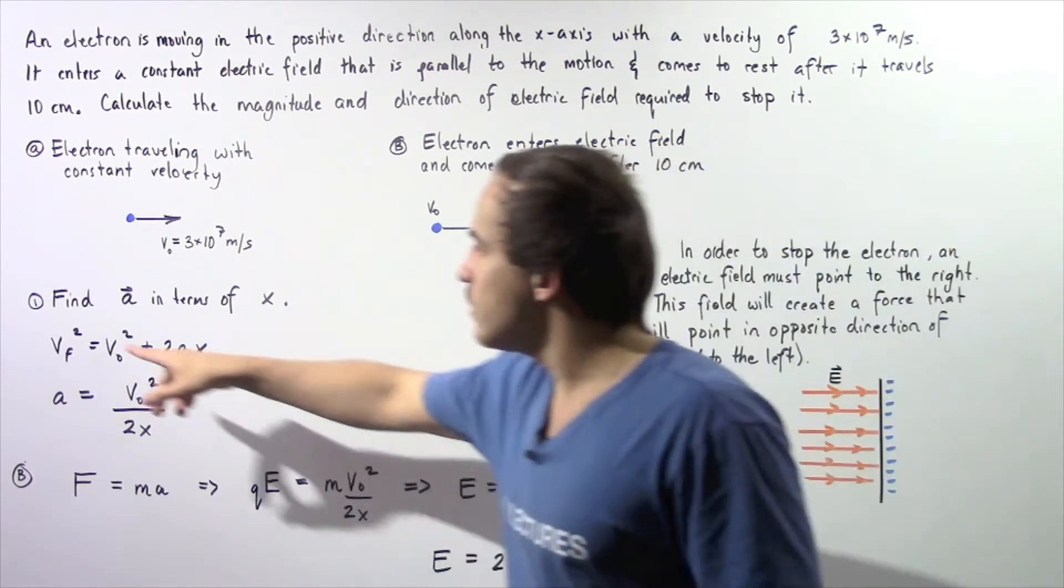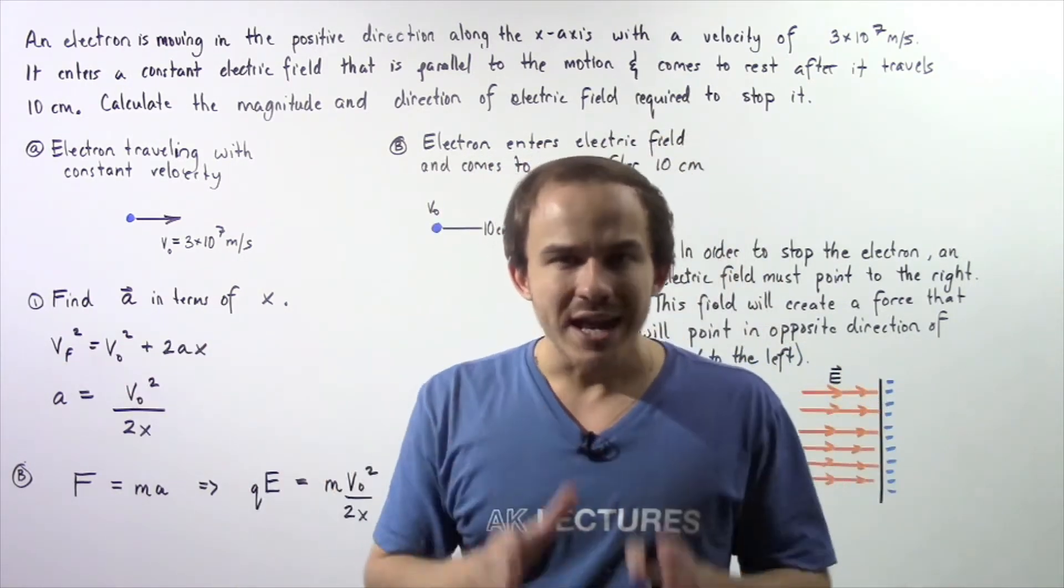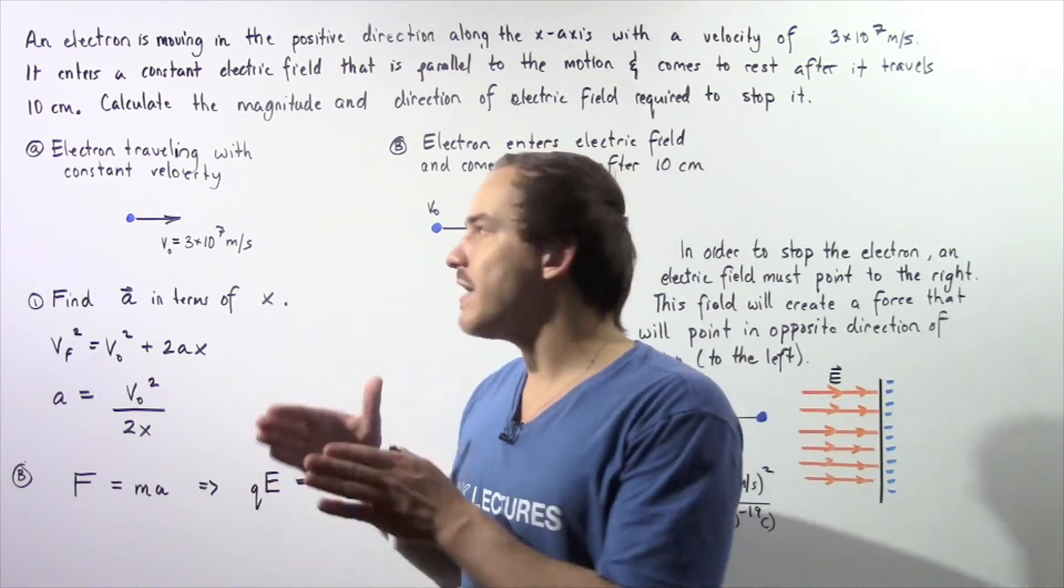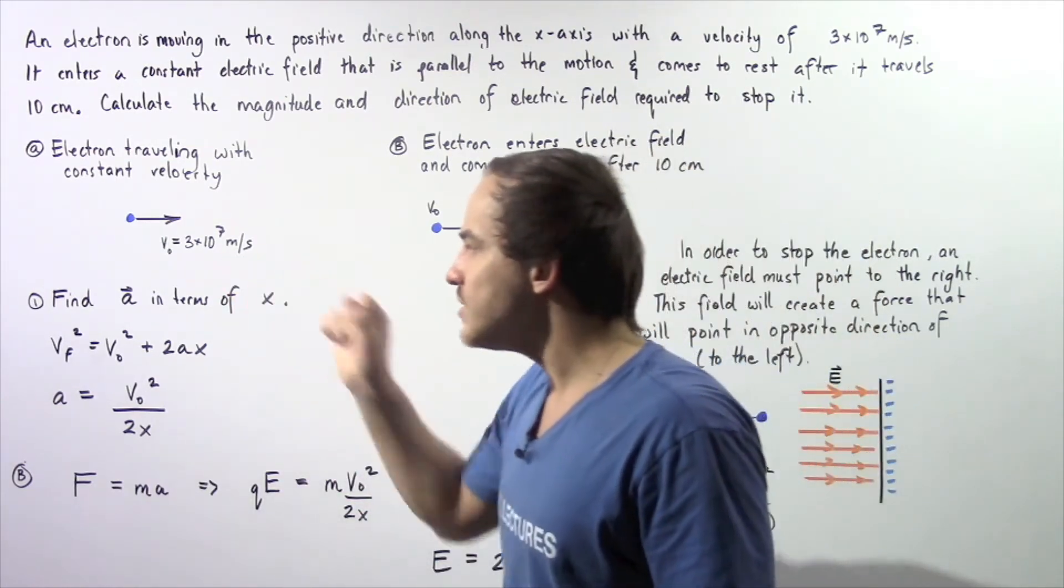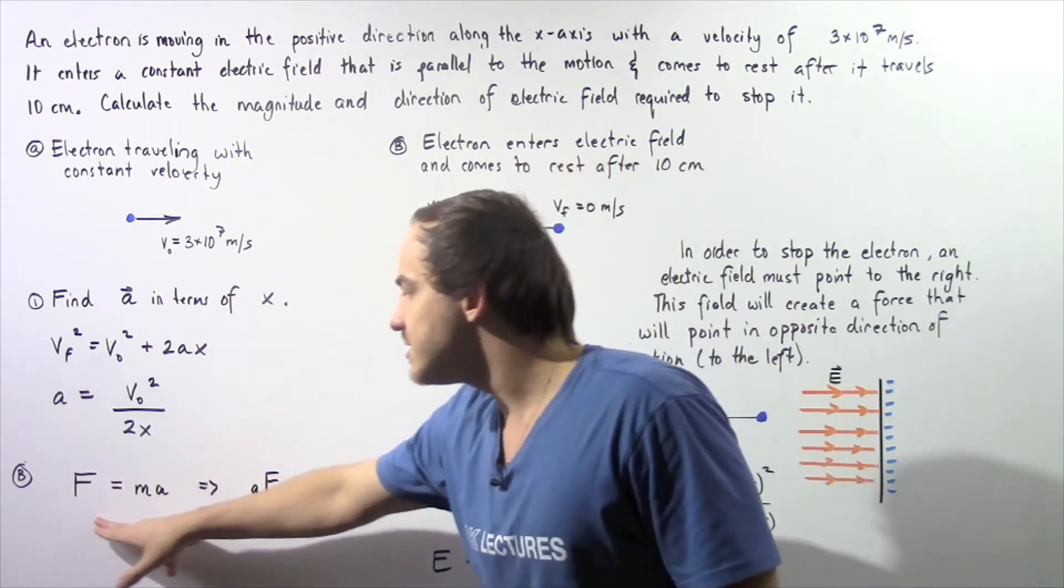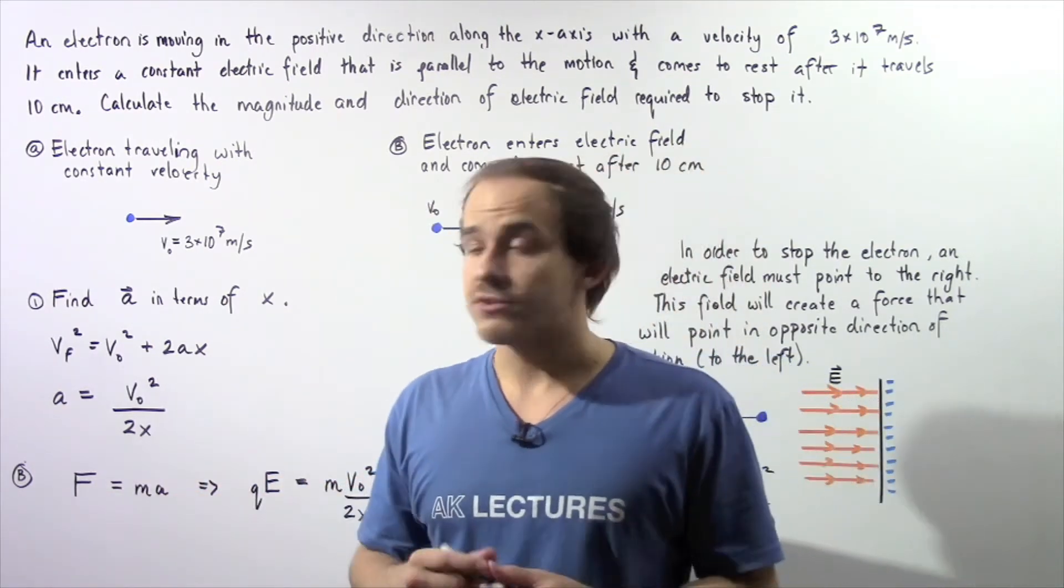Let's begin with part one. We want to find what our acceleration is in terms of x, in terms of our distance. If we find the acceleration, we can use the second law of motion to solve for our electric field.